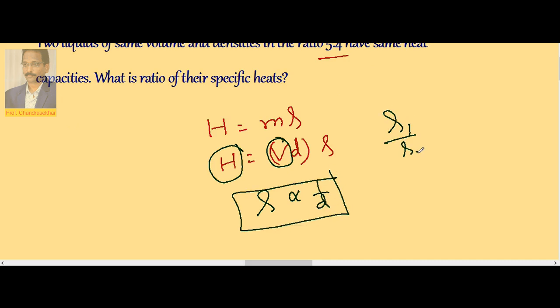So S1 by S2 is equal to D2 by D1. So it is 4 is to 5. So the ratio of the specific heats is 4 is to 5.